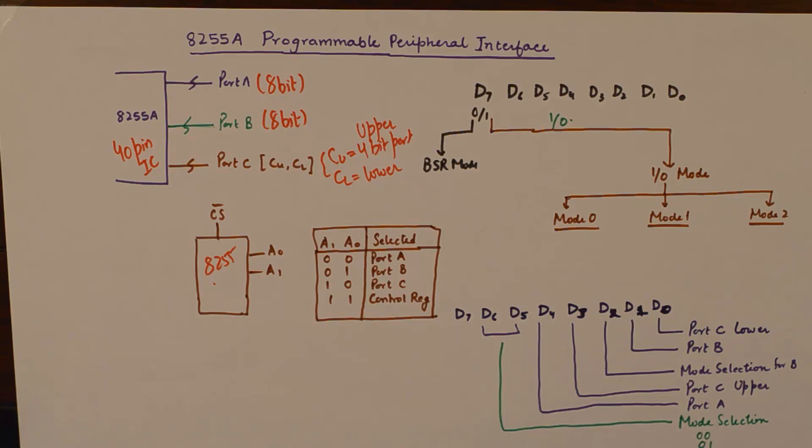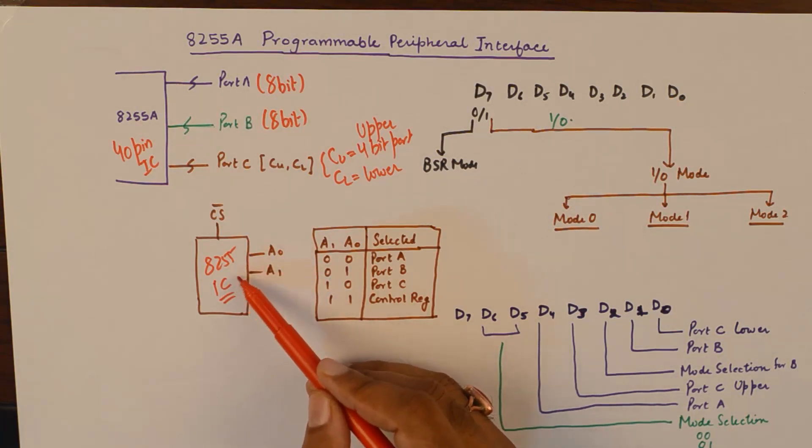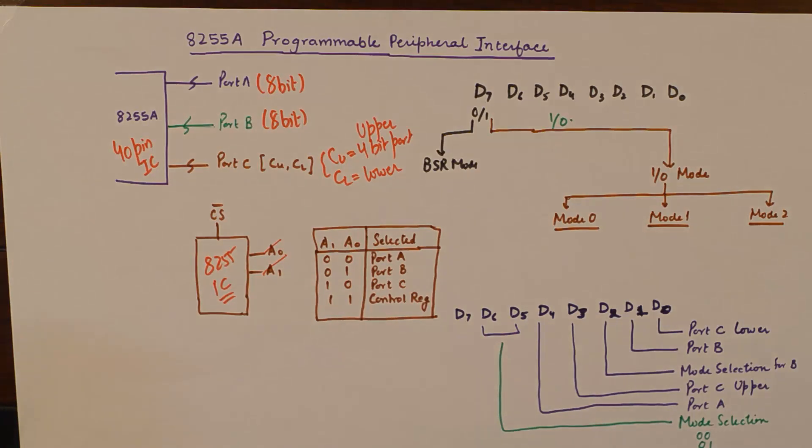Now these three pins that I am talking about, A1 and A0, are going to be used to select ports. By virtue of having two address lines in this IC, we automatically deduce that there are going to be four different locations where our microprocessor can go to. And what are those four different locations? Because our microprocessor will be connected to this IC 8255 using these two address lines. Of course, you can do a memory mapping or an IO mapping depending upon your choice. But there are only going to be four different locations in 8255 where microprocessor can breach into, where microprocessor can go into.